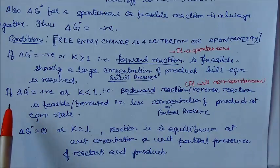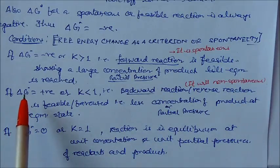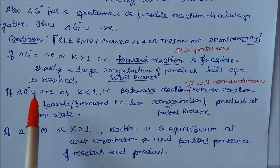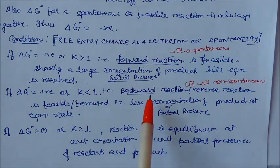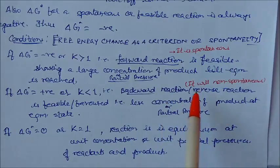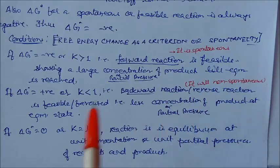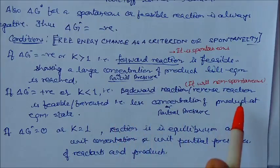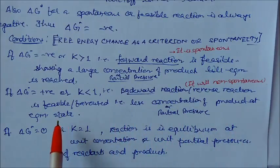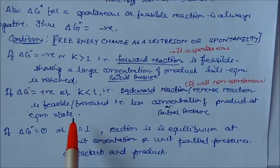The second condition is: if delta G° is positive, then K is less than 1, and the backward reaction is favoured. This means the reaction is non-spontaneous, and the reverse reaction is possible. In this case, a lower concentration of product or partial pressure is favoured at equilibrium.